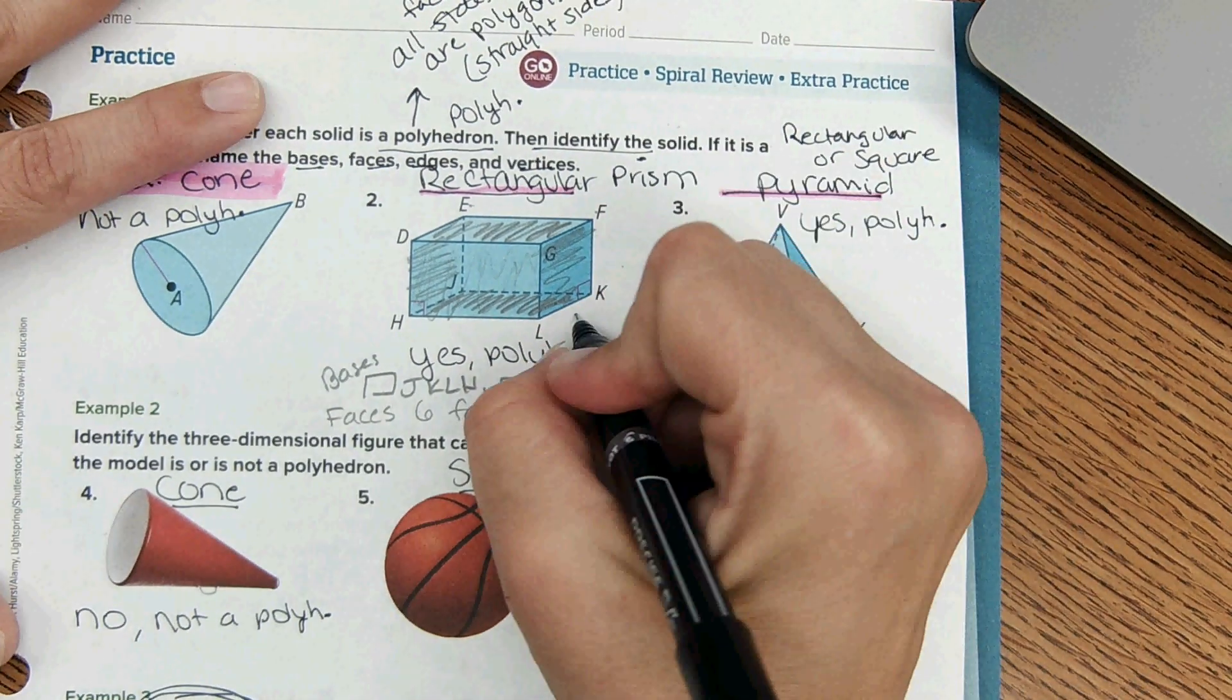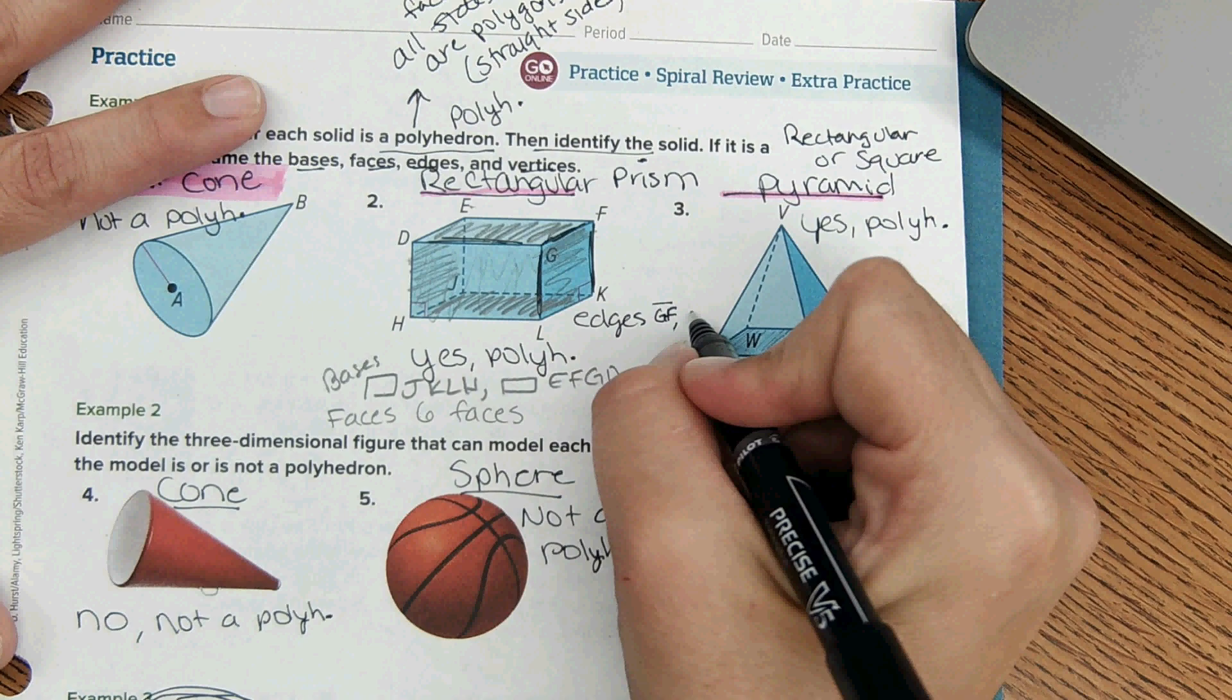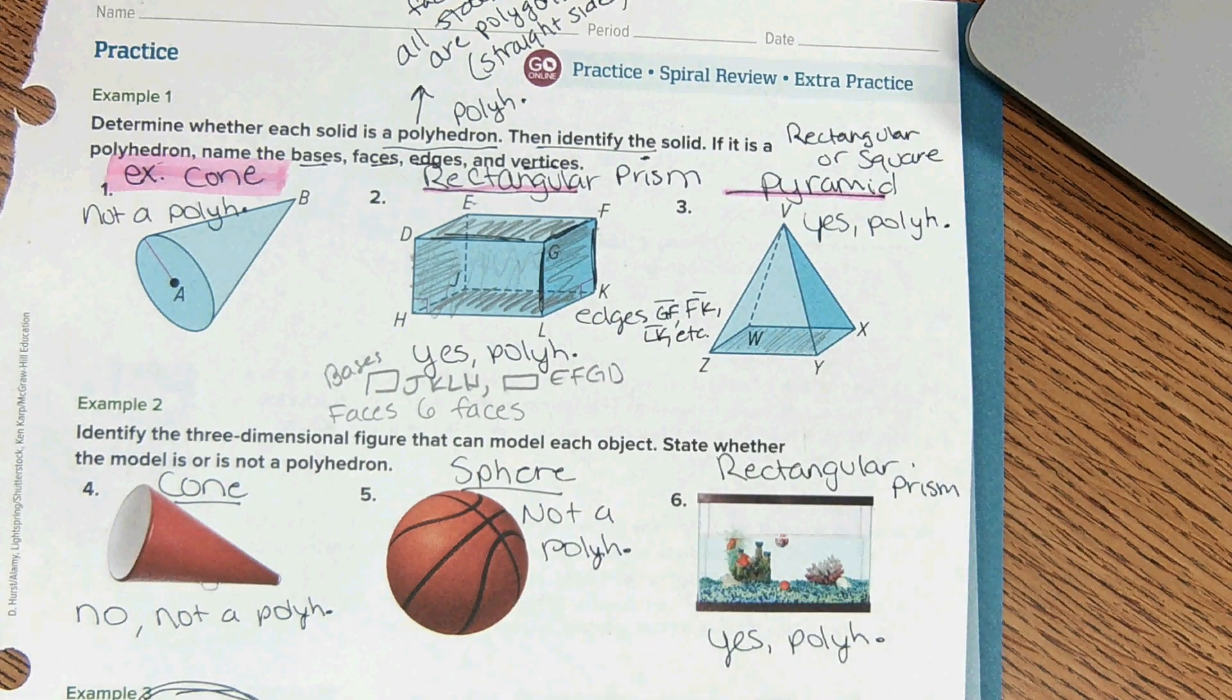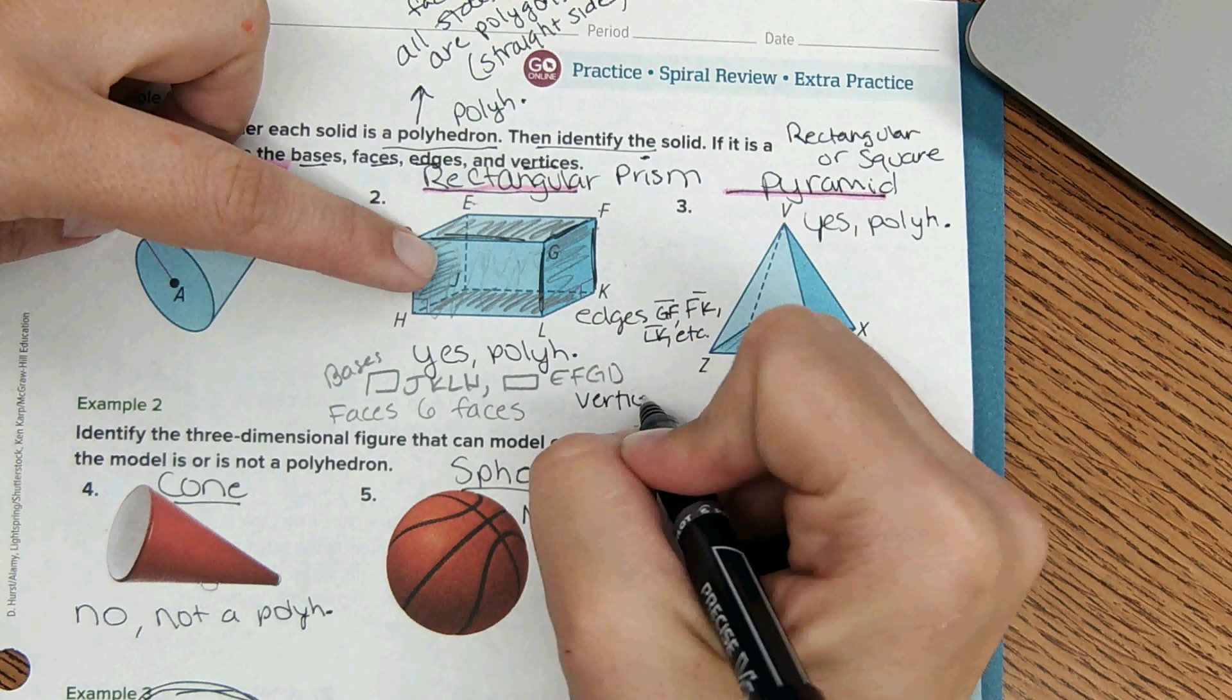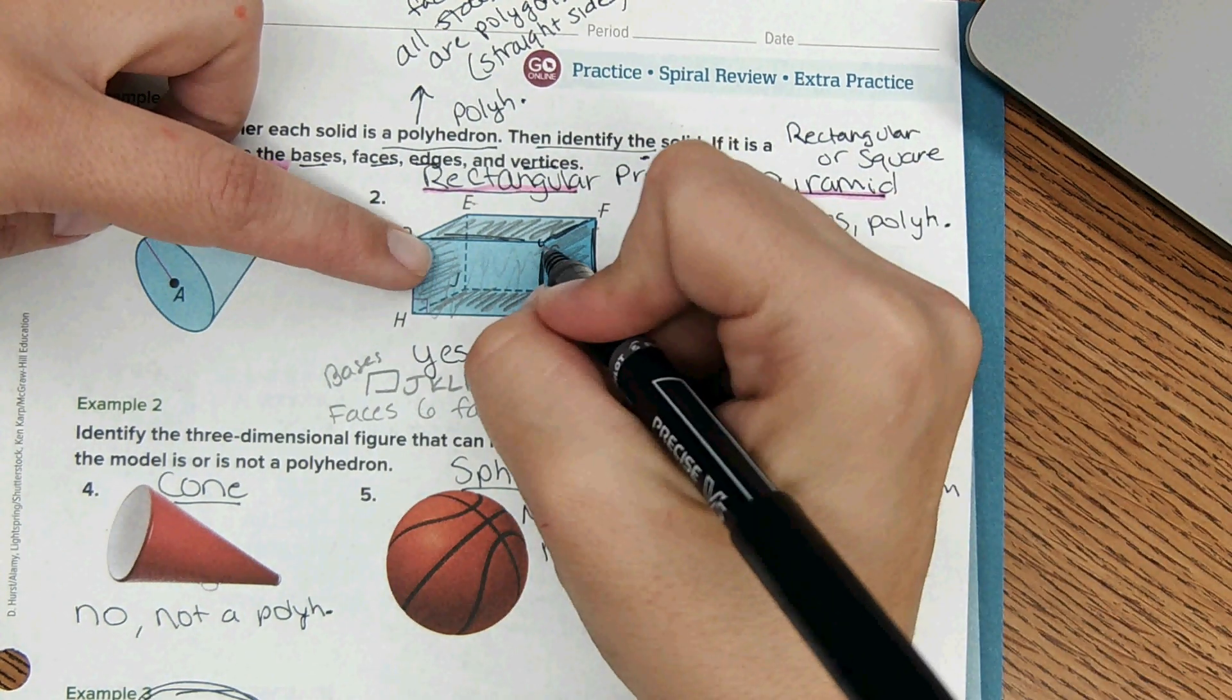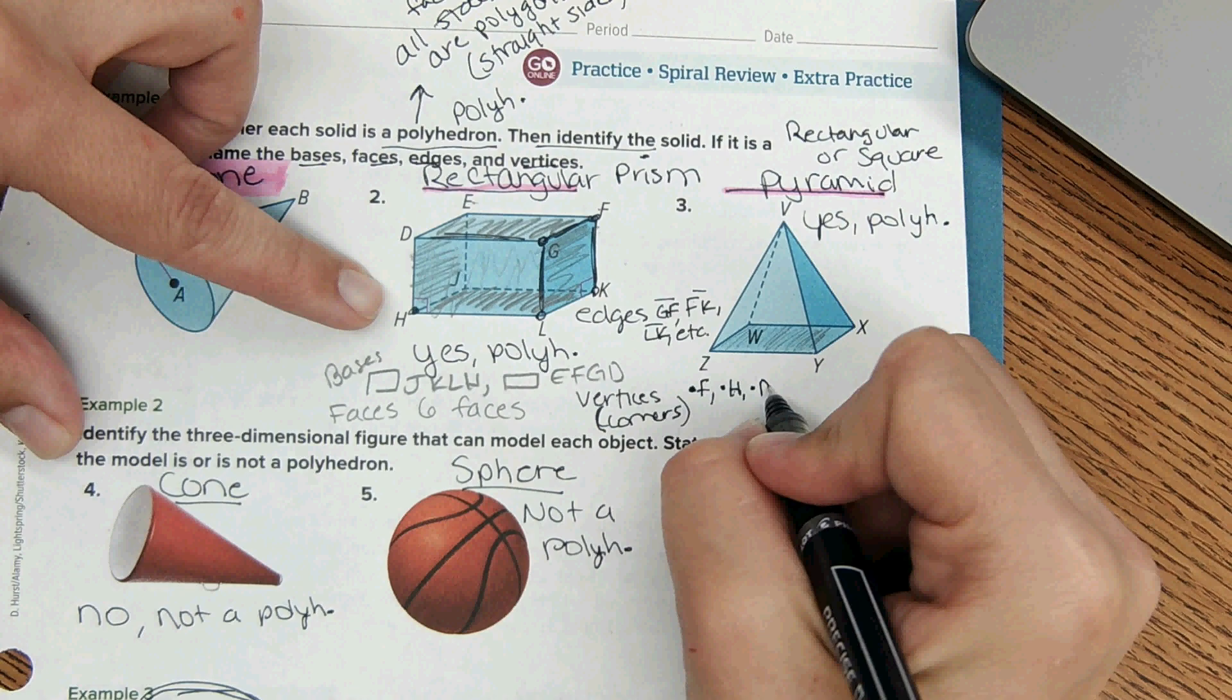And then it asks for edges. Edges are just the line segments everywhere, so these are all edges. You could say segment GF, segment FK, and you could just do this all day long - LK, etc. Those are all the edges. And then last but not least, vertices. Vertices are the corners, so it would be like point G, point F, point K, point L, point H, etc. So I'll just name a couple - point F, point H, point D, etc.